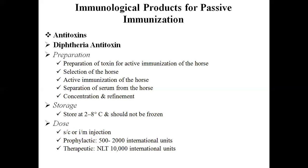The first stage is preparation of toxin for active immunization of the horse. A pure culture of Corynebacterium diphtheriae is grown in a suitable culture media at around 37°C for four to seven days. After the incubation period, 0.5% phenol is added and the culture media is filtered through bacteria-proof filters. The filtrate is a crude toxin, which is then converted into toxoid.